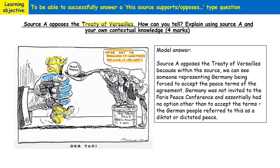That's how we start our answer. 'Source A opposes the Treaty of Versailles — how can we tell? Well, we can tell because within the source we can see someone representing Germany being forced to accept the peace terms of the Treaty of Versailles.' By describing what we can see in the source, we are already explaining using Source A — that's the first part done.